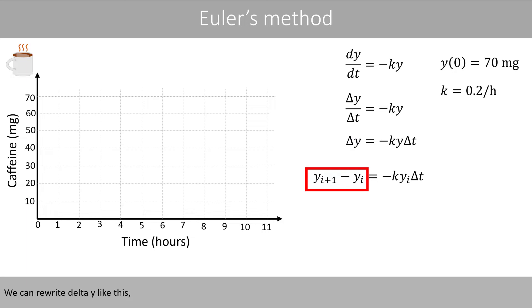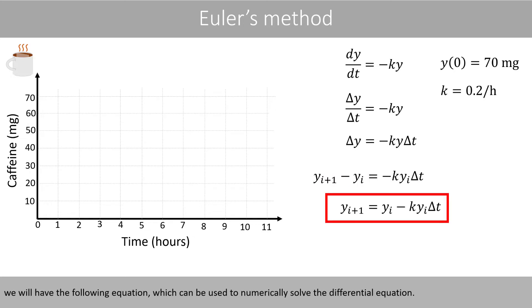We can rewrite Δy like this, where y sub i represents the value of y at the current time step, whereas y sub i plus one represents the value of y at the next time step. If we move this term to the right-hand side, we will have the following equation, which can be used to numerically solve the differential equation.